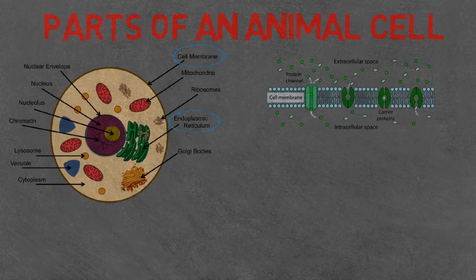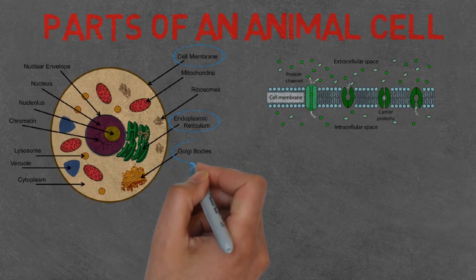I know you're probably asking what is a vesicle. Well, it is a small membrane-bound sac that allows the cell to transport proteins and lipids around the cell.